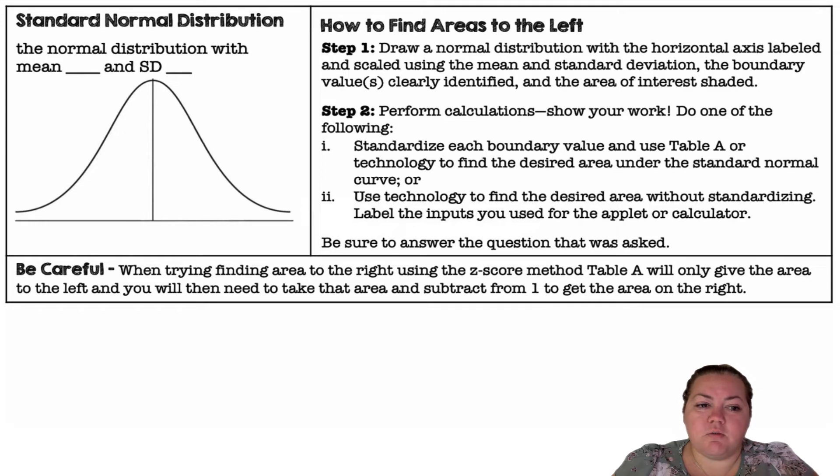Alright, so we have a standard normal distribution. The normal distribution with a mean of 0 and a standard deviation of 1 will give you all your z-scores.